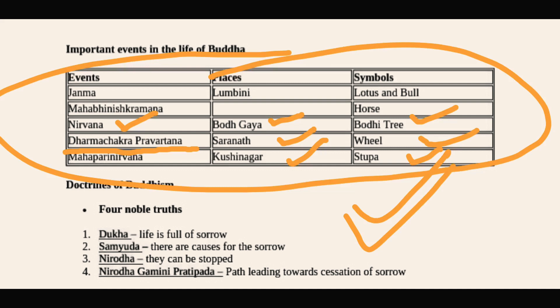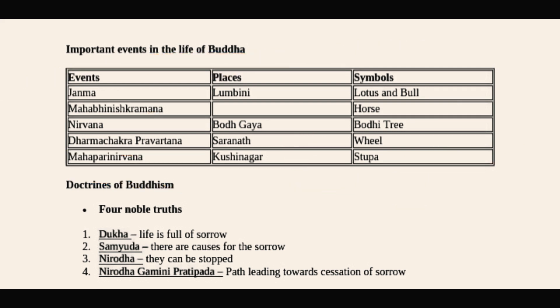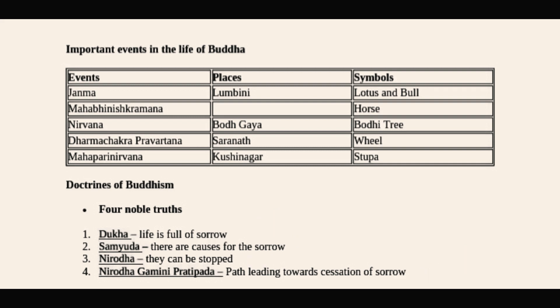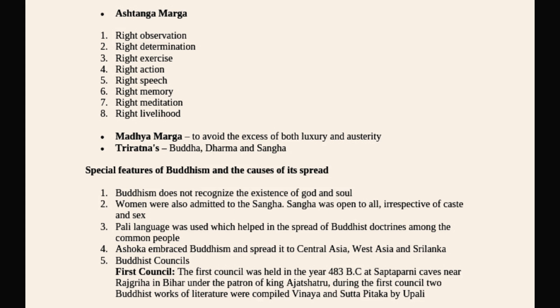The doctrines of Buddhism include the Four Noble Truths. First, Dukha: life is full of sorrow. Second, Samudaya: there are causes for sorrow. Third, Nirodha: they can be stopped. Fourth, Nirodha Gamini Pratipada: the path leading towards cessation of sorrow.